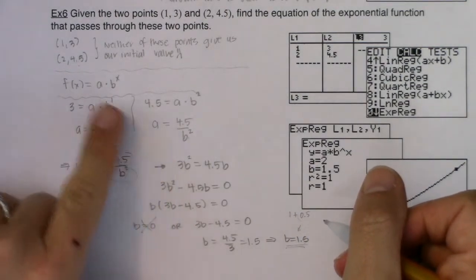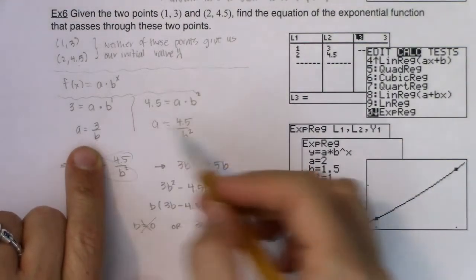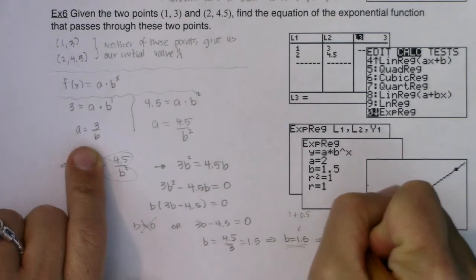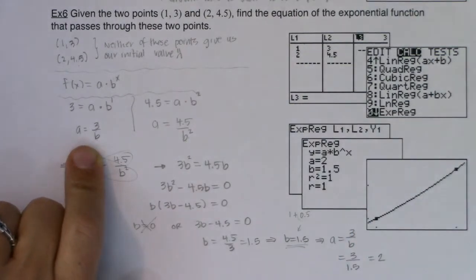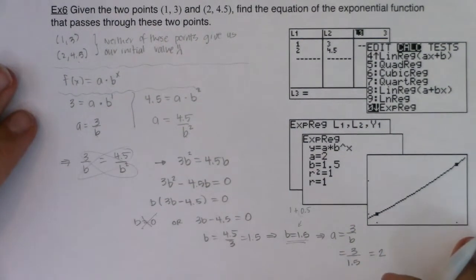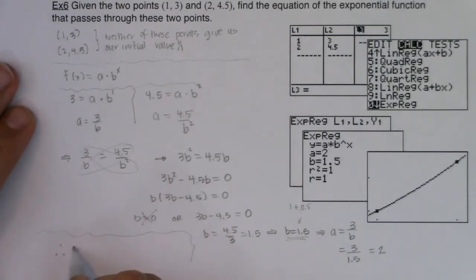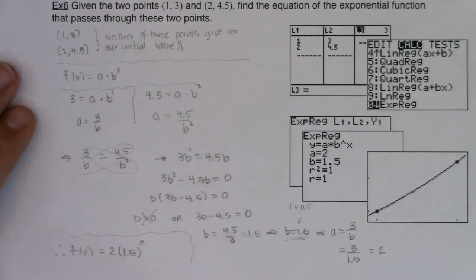All that being said, I know my base is 1.5. The last thing I need is my a value, and then I'll be able to model my function. I'll plug b into the simpler equation: a = 3/b = 3/1.5 = 2. So after all is said and done, my exponential model is f(x) = 2 times 1.5 to the x. And that is pretty convoluted — that's a lot of algebra to solve.